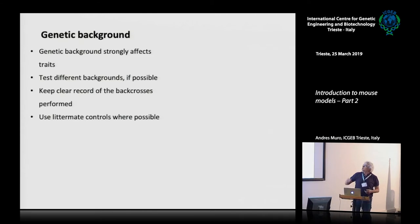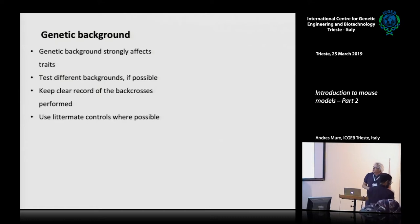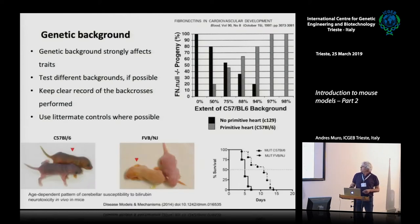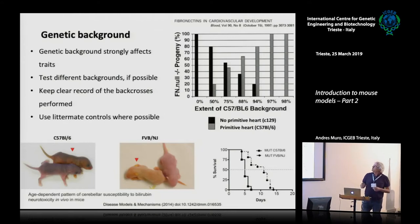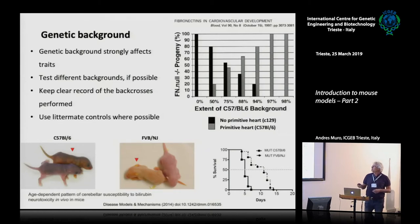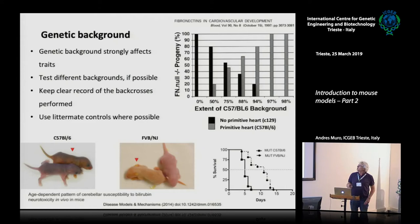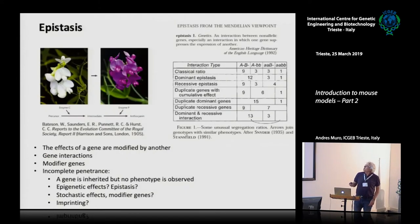We ended this morning just mentioning this part about genetic background. The following slide — we were talking about the variability, or the differences, that we see in genetic background: different strains of animals have different phenotypes. We mentioned two examples — one from our lab, and one from a knockout that was published in a field I was working in a few years ago.